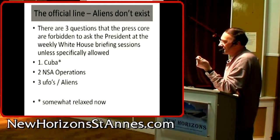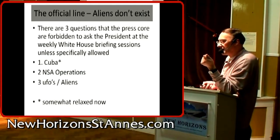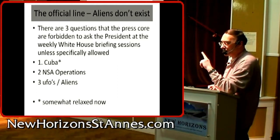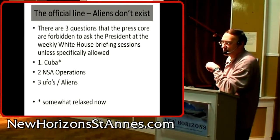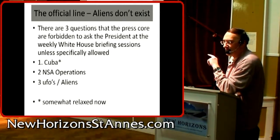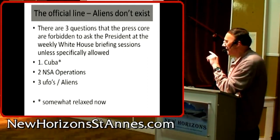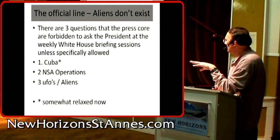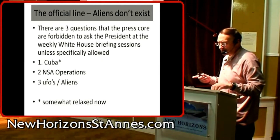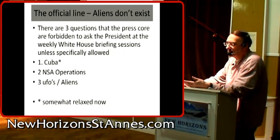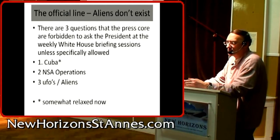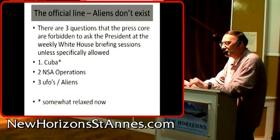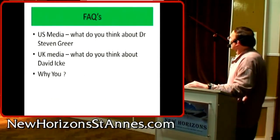There are three questions the press corps are forbidden to ask the President of the United States at the weekly White House briefing. One is Cuba — you're not allowed to ask the president any question about Cuba. Two, you're not allowed to ask about the National Security Agency. Three, you are not allowed to ask about UFOs or aliens. If any member of the press corps asks any of those questions, that press organization is banned for three to six months from the White House.